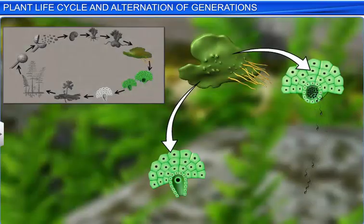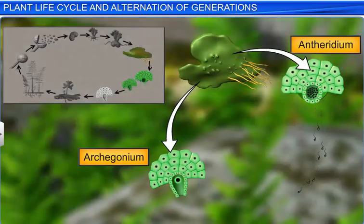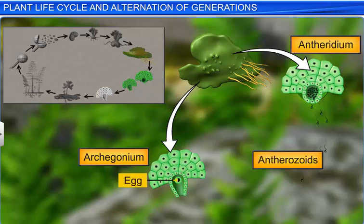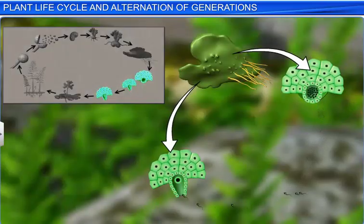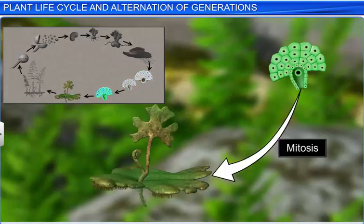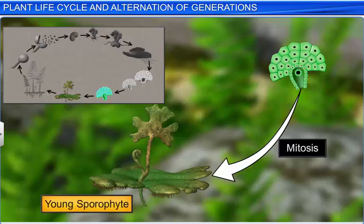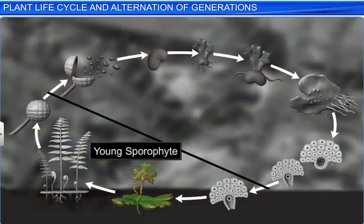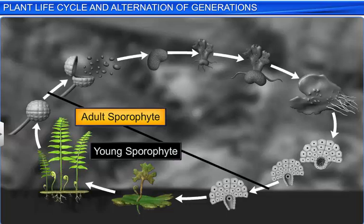The prothallus bears the antheridium and archegonium, that respectively produce antherozoids and egg — the haploid male and female gametes. The fusion of these haploid gametes results in the formation of a diploid zygote, which undergoes mitosis to produce a diploid young sporophyte. The young sporophyte soon matures into an adult sporophyte, completing the life cycle.